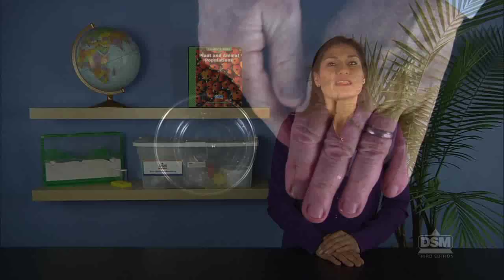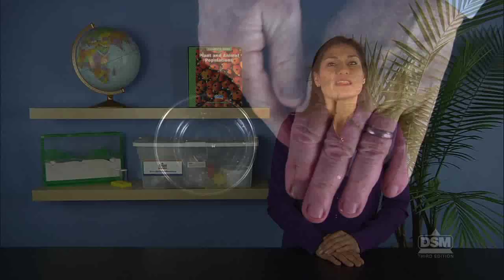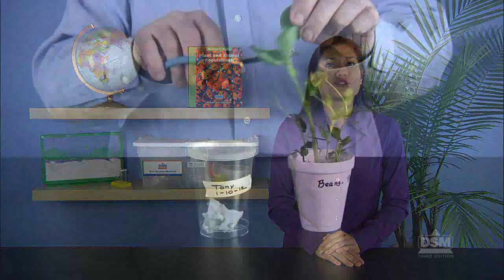Divide the teams of four into teams of two and distribute the materials. Instruct teams to label their ladybug container with their names and today's date. Have them wet the paper towel, fold it, and place it in the ladybug container. Then instruct students to cut two leaves from the bean plant and place them inside the container on the wet paper towel.